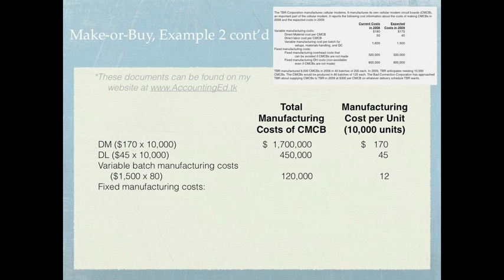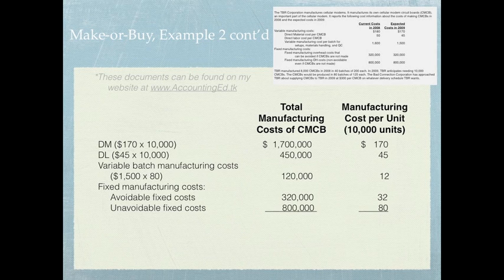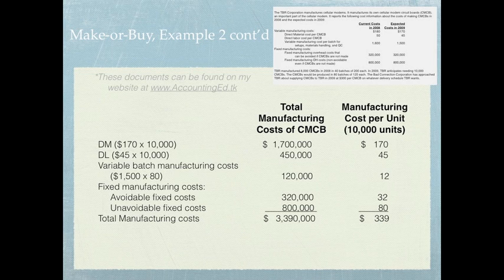Fixed manufacturing costs come in two types: avoidable and unavoidable. Avoidable fixed costs are $320,000 — these are costs we would not incur if we decided to buy from another supplier. Unavoidable costs are $800,000, incurred regardless of which decision we make. Including both, the total manufacturing cost is $3,390,000 to produce 10,000 units in 2009, or $339 per unit.